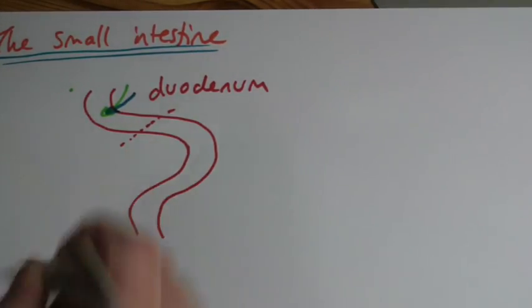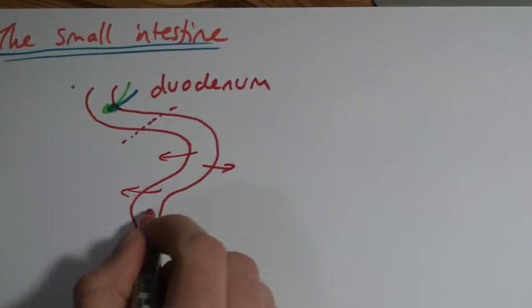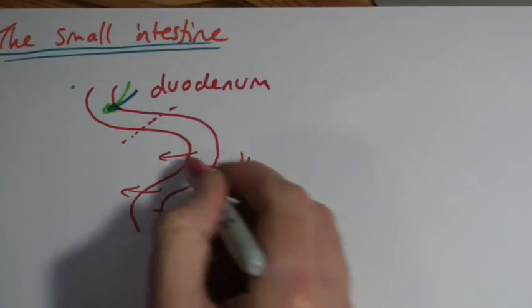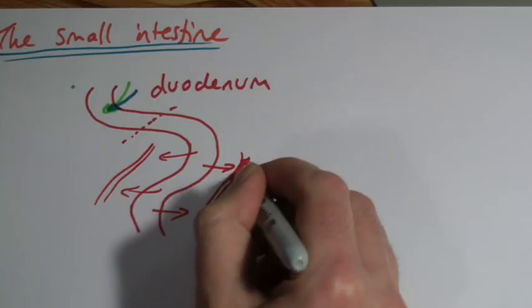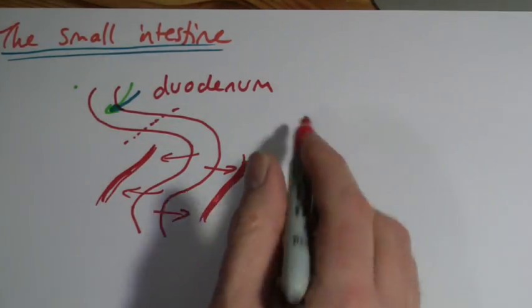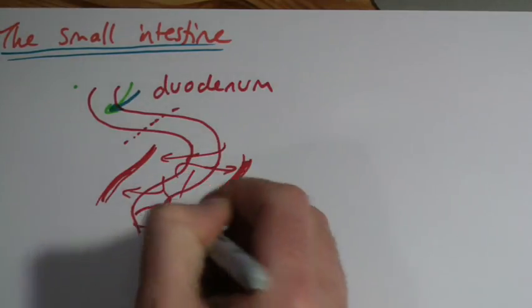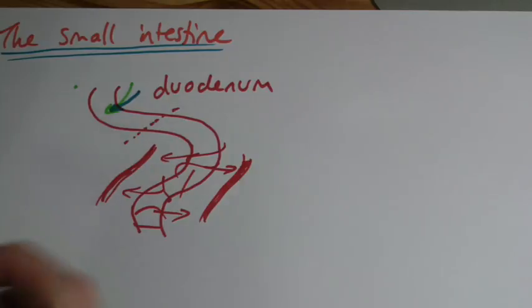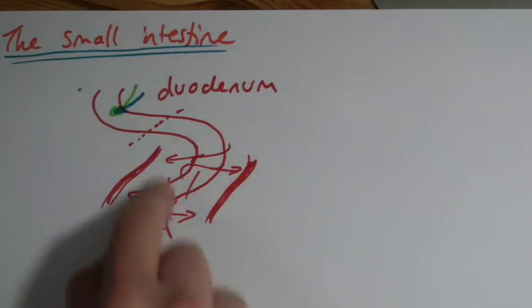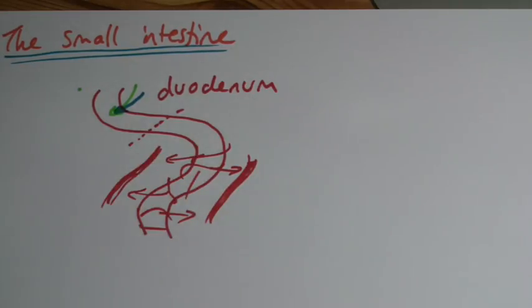The second section is where the food that has been digested and made soluble is absorbed into the blood. Should have used a different color here, but that's going to be the blood vessels. Now I've drawn them sort of sticking out the outside. In reality the blood would be really close, and we'll look at the structure in a second, but I just wanted to give the idea that in this second section of the small intestine, by far the longest part, this is where the absorption takes place.